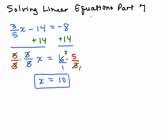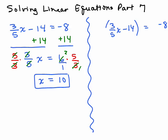Now we want to contrast that. How about if I had 3 fifths x minus 14 equals negative 8. How about if I multiplied both sides by the least common denominator which is 5. So I have to multiply the left-hand side of the equation and the right-hand side of the equation by 5. We're multiplying both sides by 5. So we have to do the distributive property on the left, 5 over 1 times 3 fifths x minus 5 times 14, and 5 times negative 8 is negative 40.